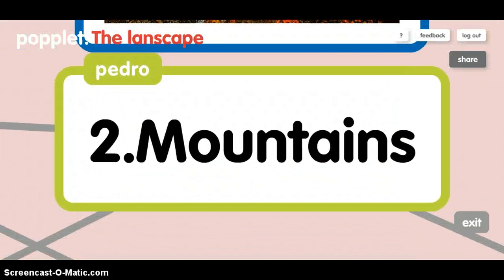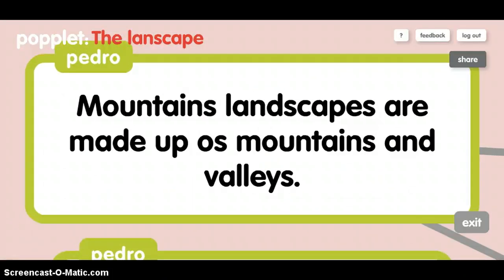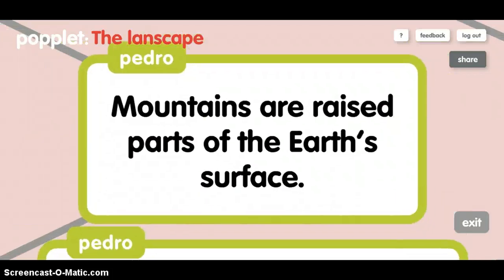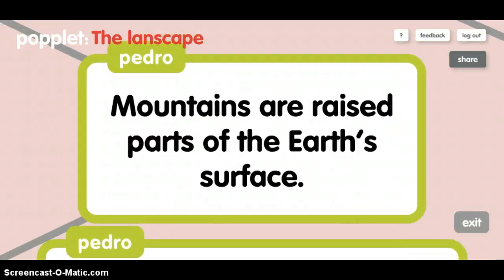Mountains. Mountain landscapes are made up of mountains and landforms. Mountains are a large part of the Earth's surface.